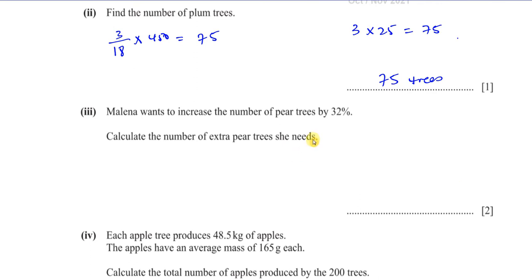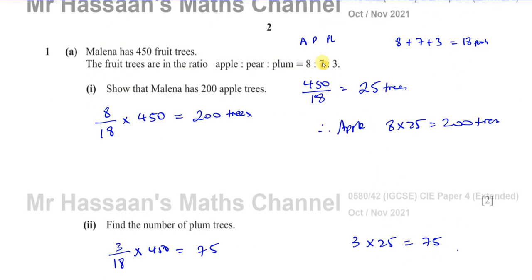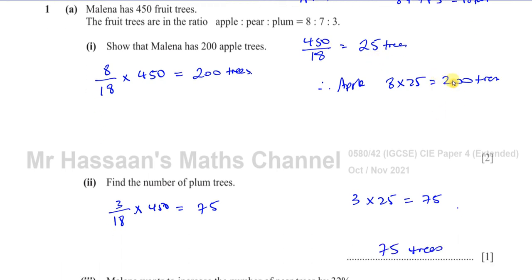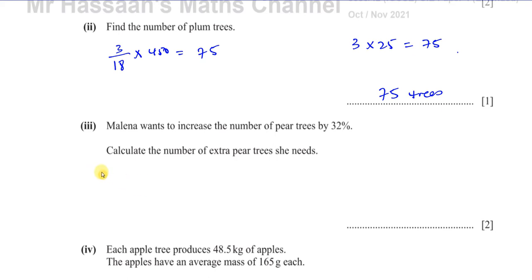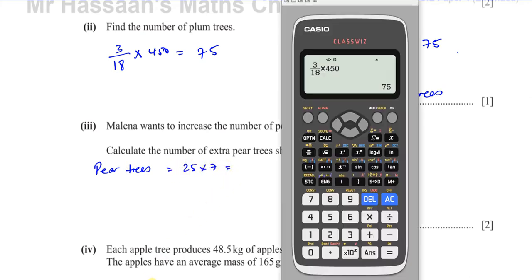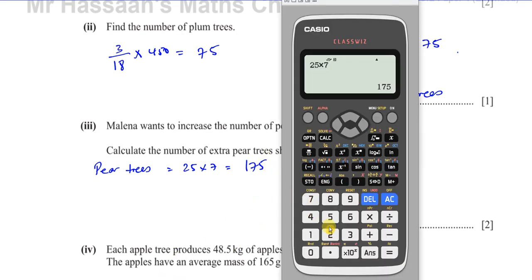Then it says Molina wants to increase the number of pear trees by 32%. Calculate the number of extra pear trees she needs. First we've got to work out the number of pear trees — that's going to be 7 times 25, or you can say 450 take away 200 take away 75. So the pear trees she has is 25 times 7, which gives you 175. You can confirm by adding 175, 75, and 200 to get 450. That's correct.